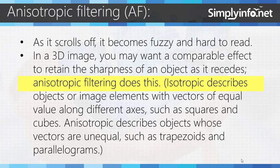Isotropic describes objects or image elements with vectors of equal value along different axes, such as squares and cubes. Anisotropic describes objects whose vectors are unequal, such as trapezoids and parallelograms.